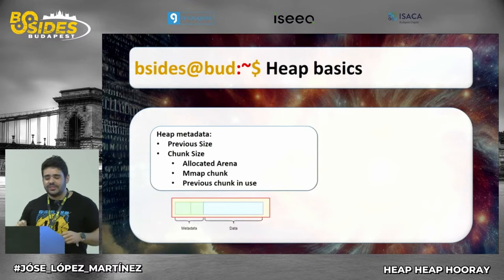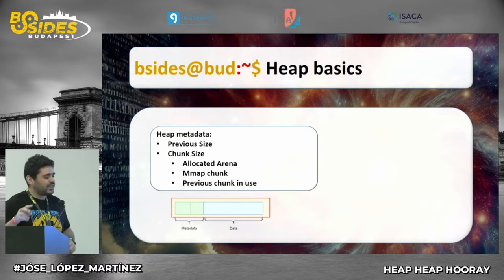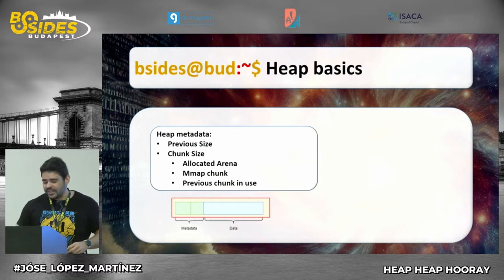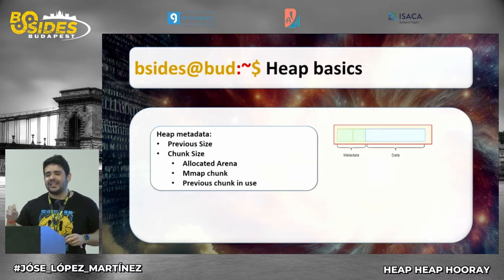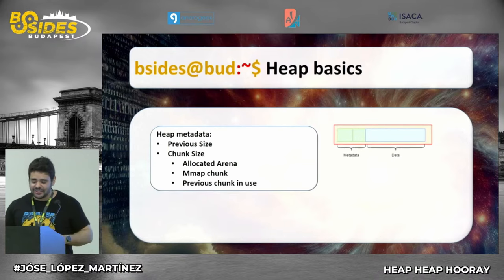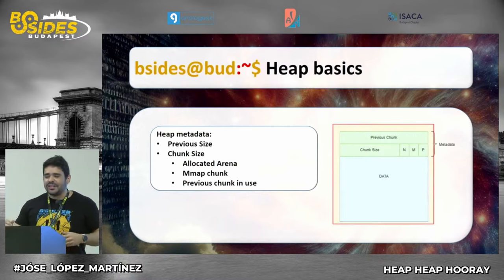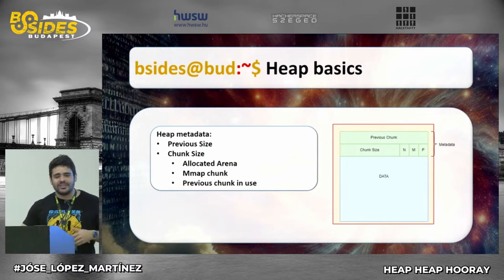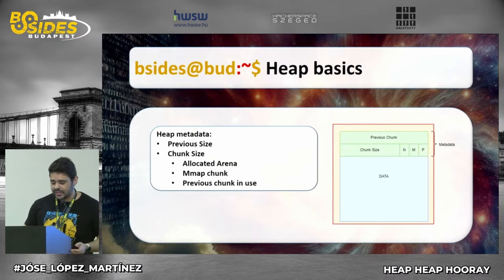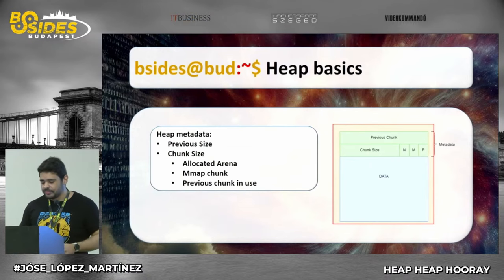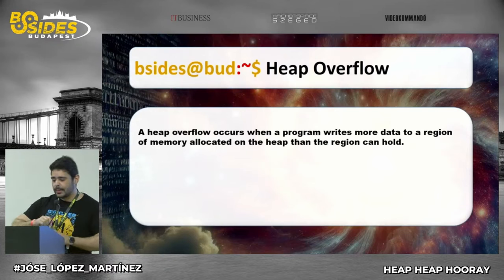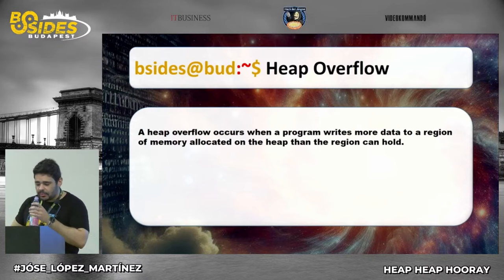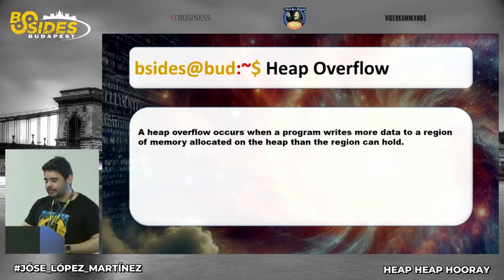Let's zoom into the chunks. A chunk is divided into two pieces: the heap metadata and the heap data. The heap works like a linked list. The heap manager checks the whole status of the heap by reading the metadata — the previous chunk, the chunk size — to understand what's going on, and then you have the data section where you actually store your information.